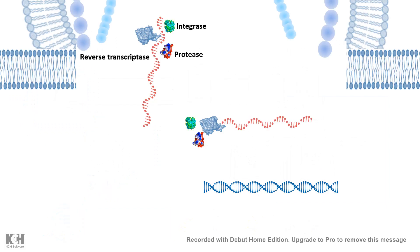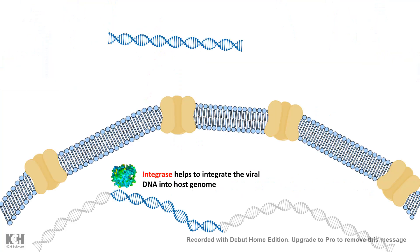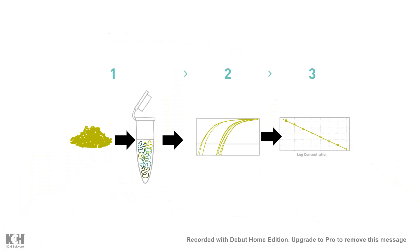The HIV virus injects its genetic material into the host T cell cytoplasm, where it is reverse transcribed by reverse transcriptase and integrated into the host genome. The virus produces large amounts of viral mRNA, and the quantity of viral mRNA gives us an idea of the rate of new HIV virus production — in other terms, the viral load and the stage of HIV propagation — which can be detected by qPCR.